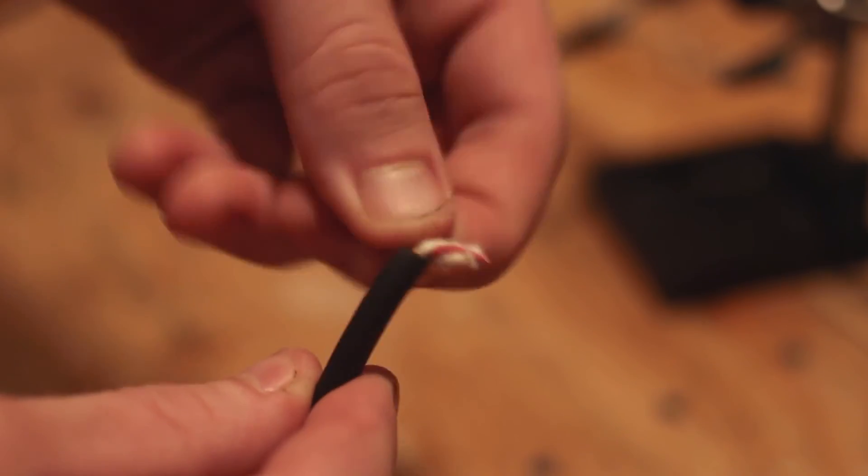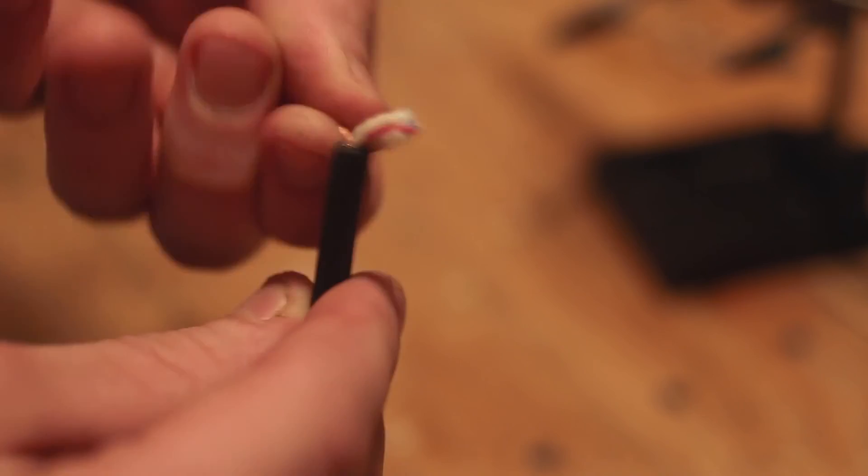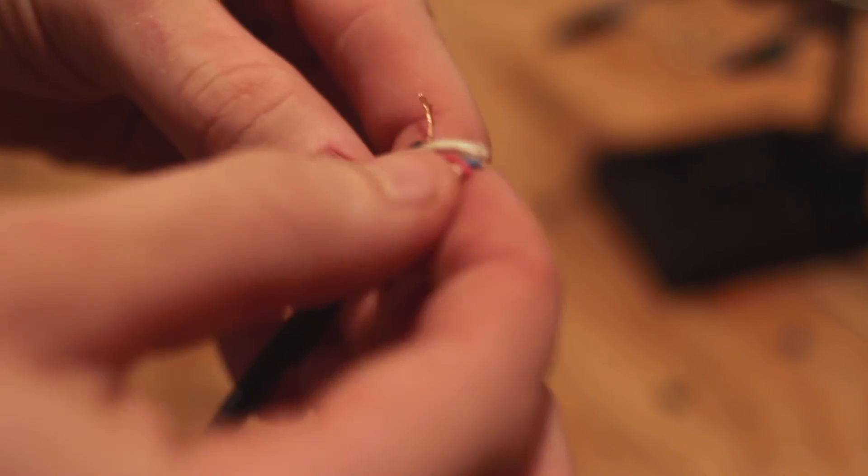Next thing you want to do is twist the ground wires so that they make one solid ground wire. Next, cut the cable insulation off.